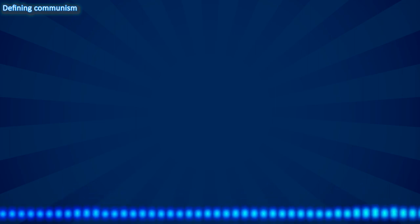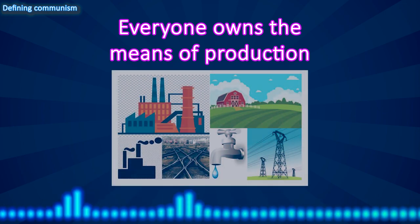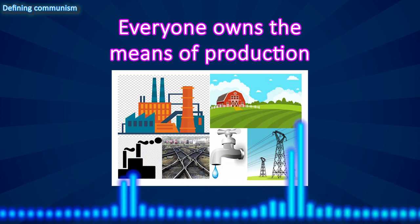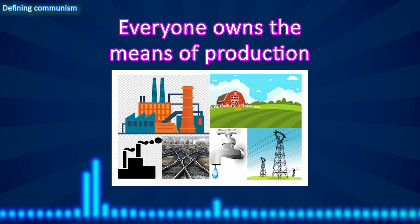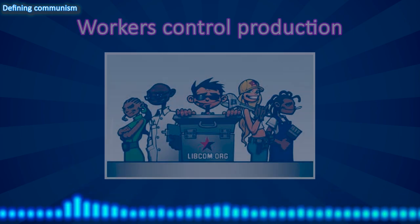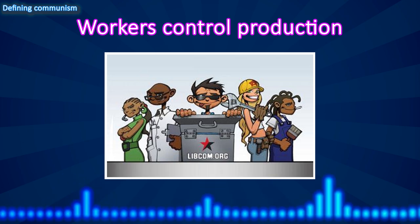Next feature of communism: everyone owns the means of production. The means of production are everything we use to produce and distribute goods and services — factories, mines, farms, power plants, railroads, natural resources, and so on. In communism, the means of production belong to everyone, which also means they're owned by no one. This is very important, because this is what makes it possible for communism to be classless. Another feature of communism is that workers control production — workers control their own work and are not under anyone's command. No capitalist bosses, no government bosses, no bosses, period. Workers are liberated from command and coercion.